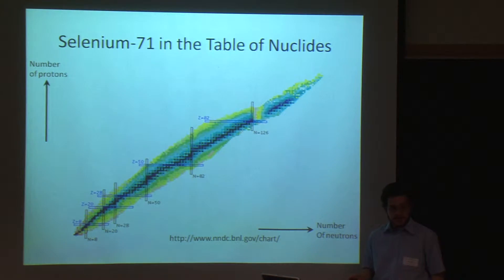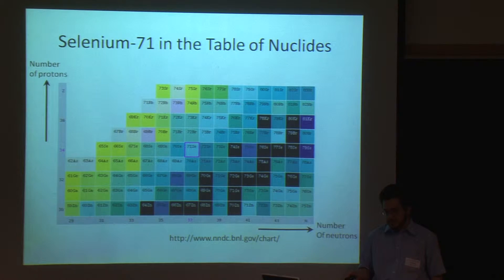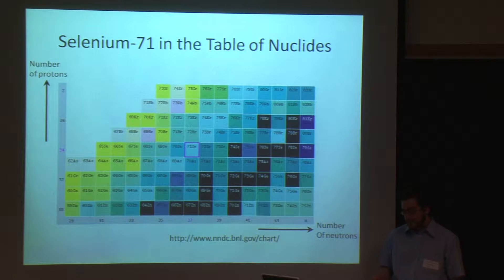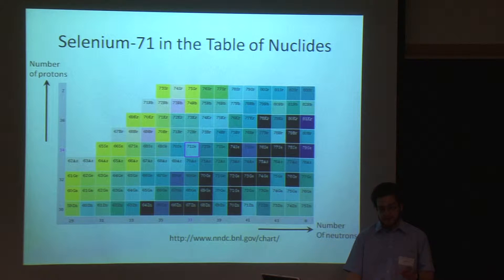Here we see the table of nuclides with all the elements and isotopes arranged by proton and neutron number. Selenium-71 is in this region here, and here's a magnified version of that area. The isotopes in black are stable or nearly stable, and the farther you get off that center line, the less stable the isotopes are and the less is known about them. And selenium-71 is just far enough off that center line, it's 4.74 minutes, that not much is known about it, so this work is really pushing the balance about what is known about these isotopes.